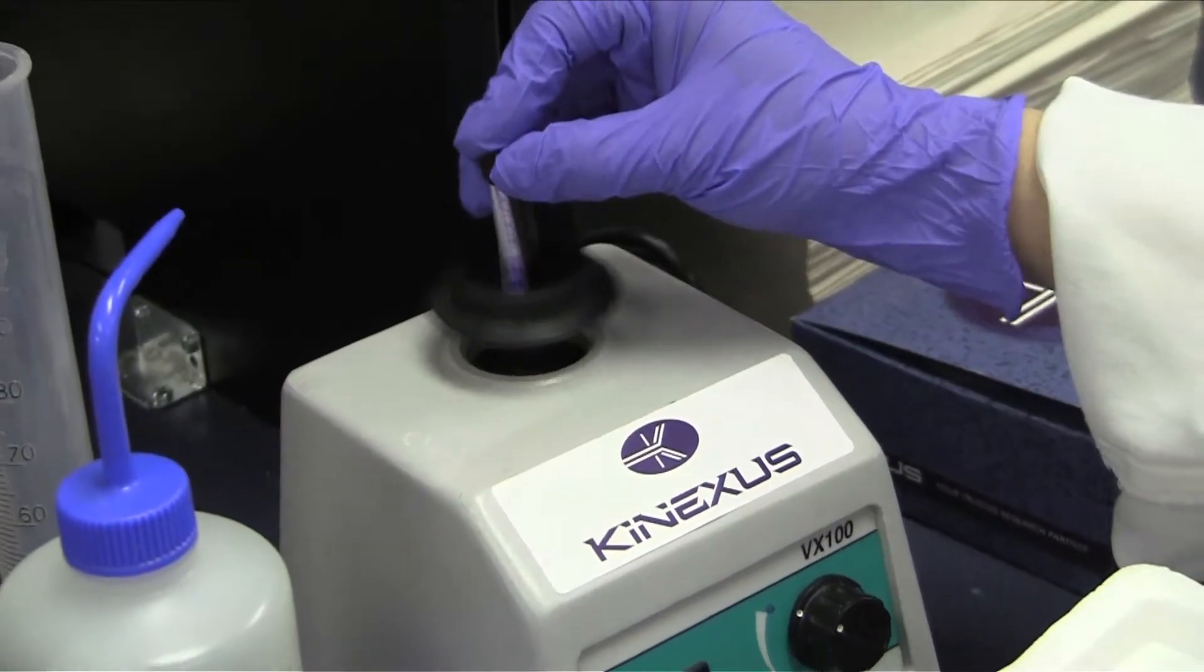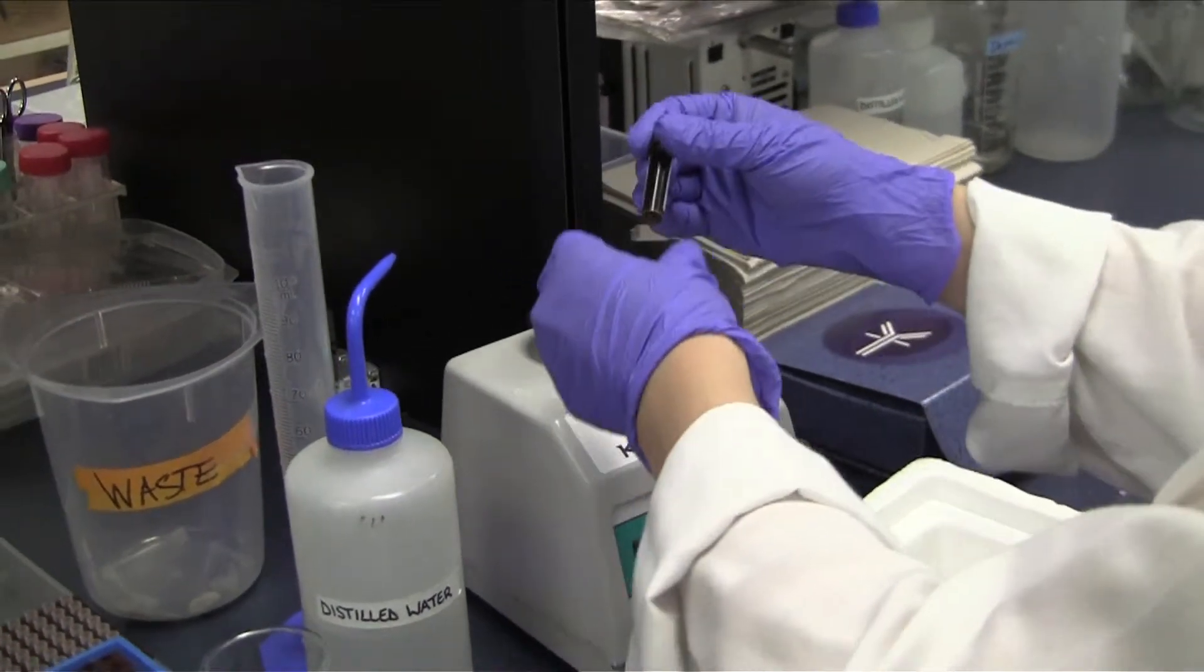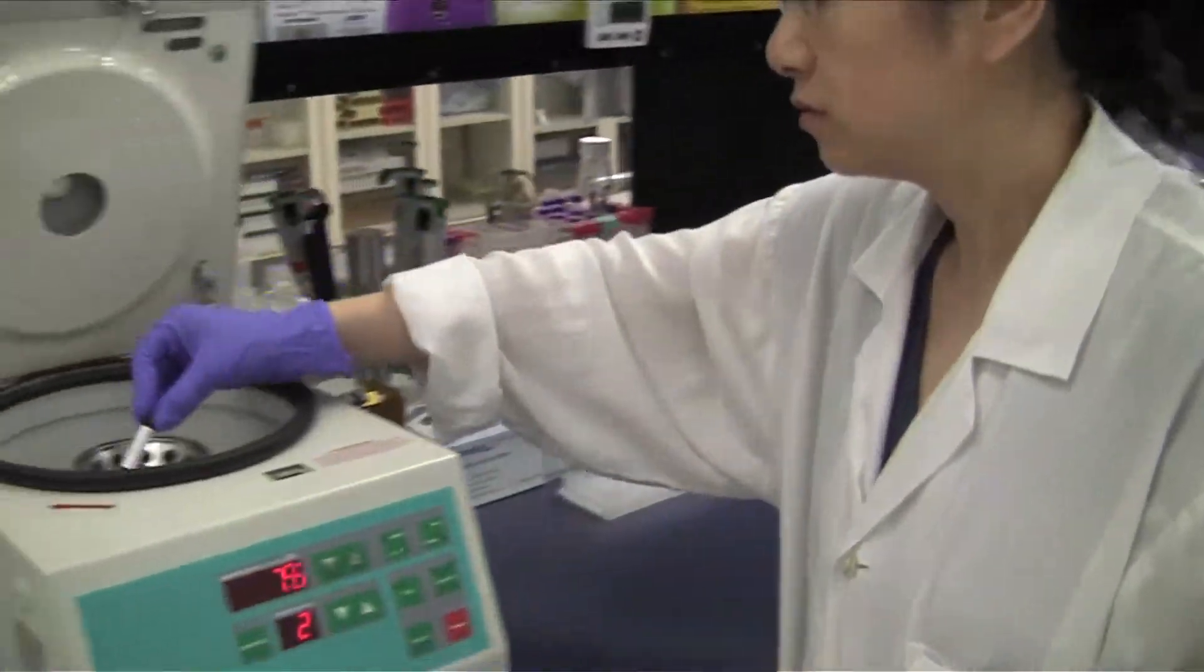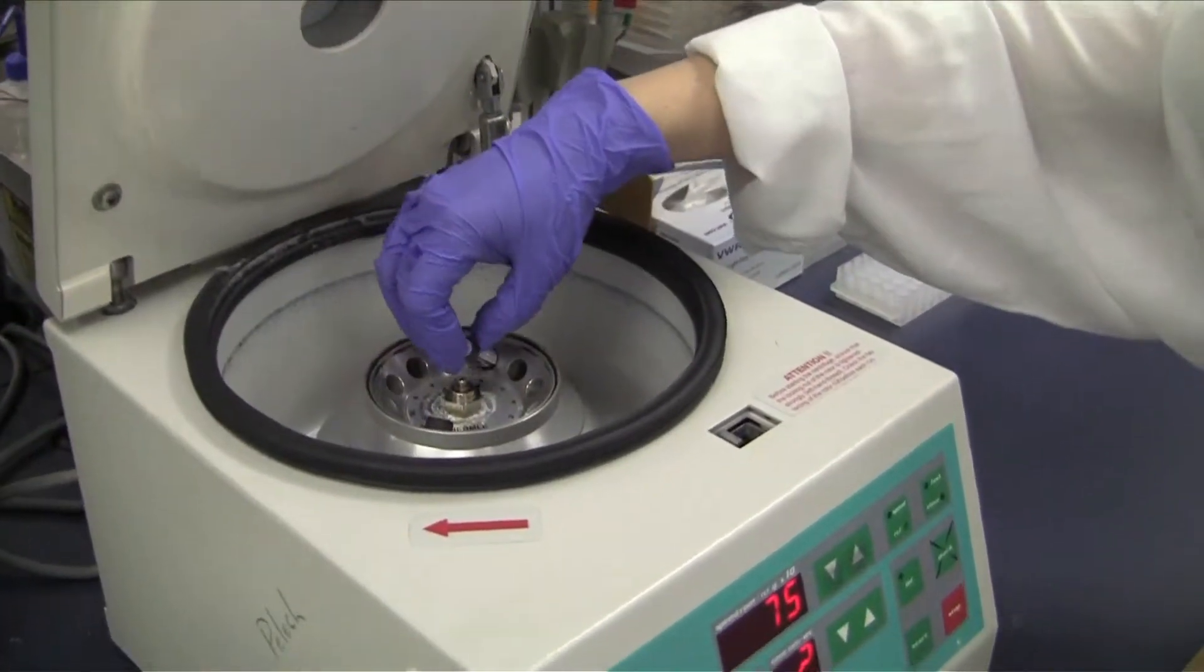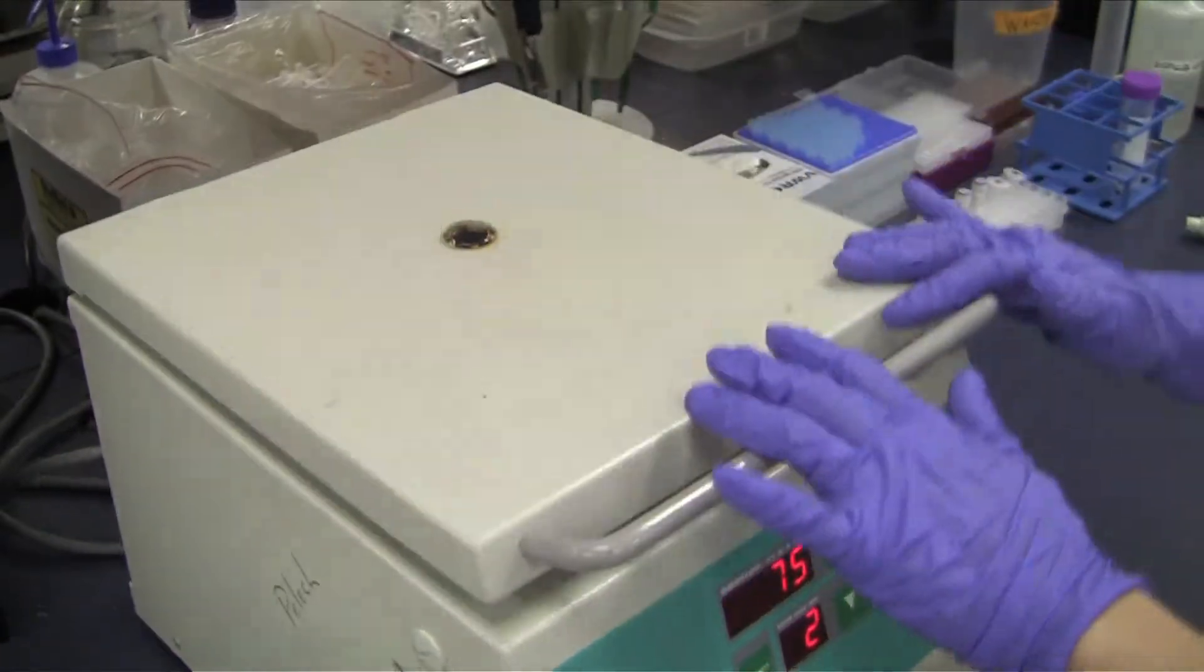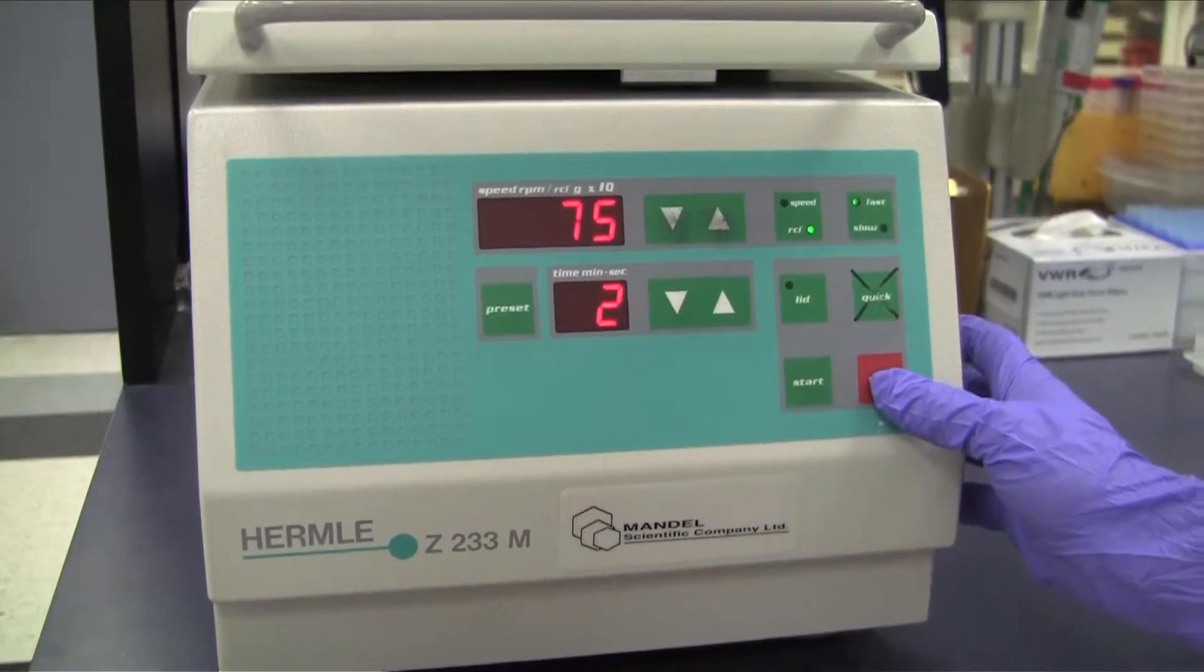Vortex for 30 seconds to completely dissolve the dye. Centrifuge briefly at 750 times G.